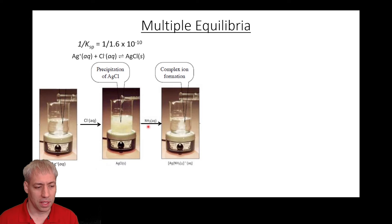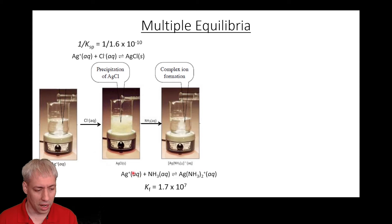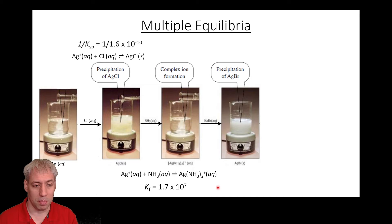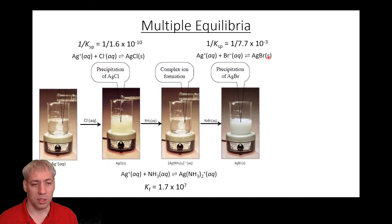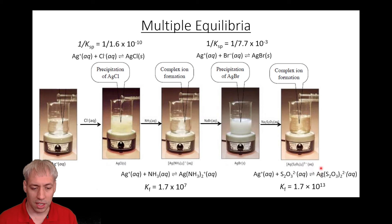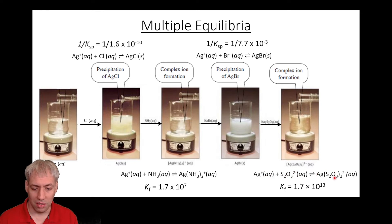We can take the same solution and add something like NH3, and NH3 plus Ag⁺ makes the complex ion Ag(NH3)2⁺, which is a soluble aqueous species. So we can draw another equilibrium: Ag⁺ + NH3 giving us Ag(NH3)2⁺ — that's the K formation constant for this complex ion. We can also add Br⁻, which forms a precipitate AgBr, giving us Ag⁺ + Br⁻ in equilibrium with AgBr — that's 1 over Ksp, flipped around. And we can add sodium thiosulfate S2O3²⁻ to make Ag(S2O3)2³⁻, a soluble ion — another K formation constant.